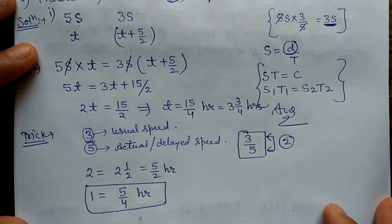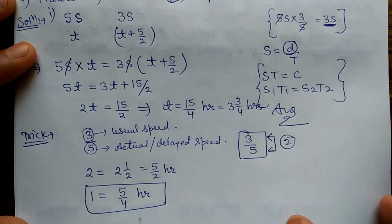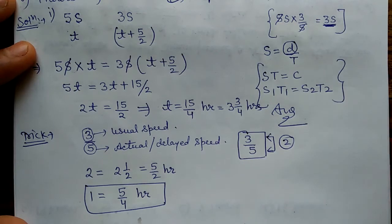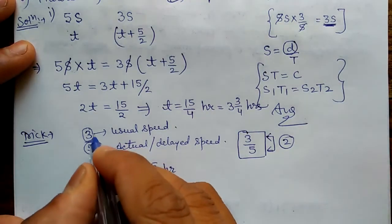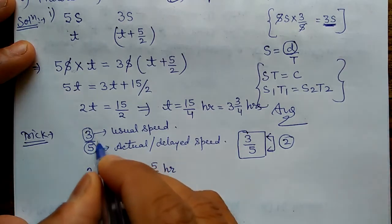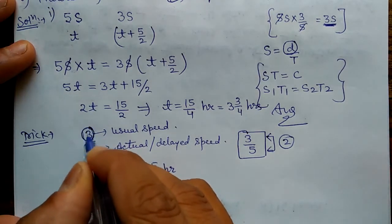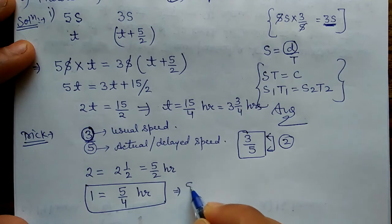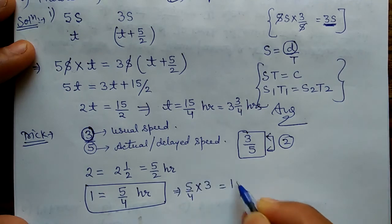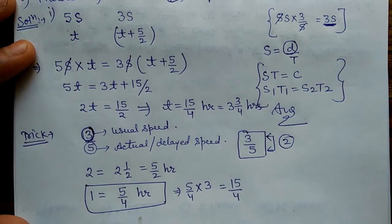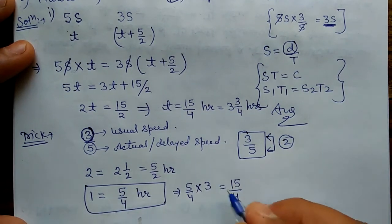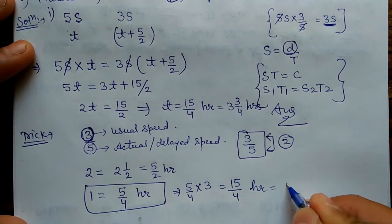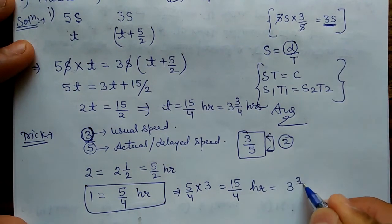He is asking for the usual time. To find the usual time, just multiply the numerator by this value: 5/4 × 3 = 15/4 hours, or 3 and 3/4 hours.